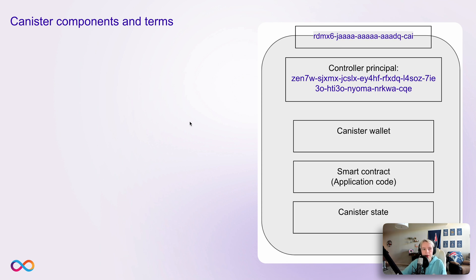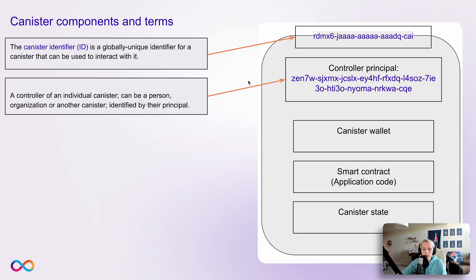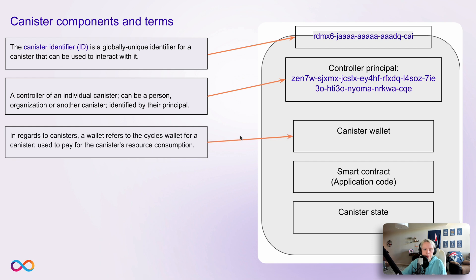Let's talk more about canister components. The diagram starts with the canister ID, which is a globally unique identifier for a canister that can be used to interact with it. Next we have the controller principal — a controller of a canister can be a person, an organization, or another canister. They're identified by their principal identity. A principal can be used to identify a canister, an individual, or an entire organization. Next we have the canister's wallet, which refers to the cycles wallet for the canister. Cycles are used to pay for the canister's resource consumption.